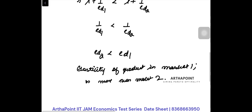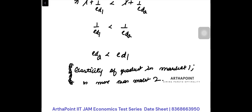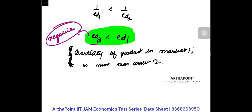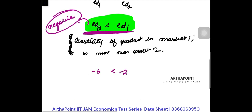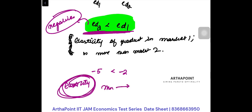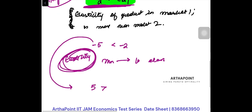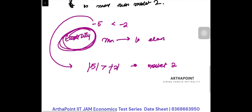But this would be a little incorrect to say, because elasticities of demand are negative. If ED1 is coming greater than ED2 in negative terms, it's like saying minus 2 is greater than minus 5. When we talk about which is more elastic or less elastic, we always refer to absolute terms. So actually, market 2 elasticity is more than market 1 elasticity in absolute terms.